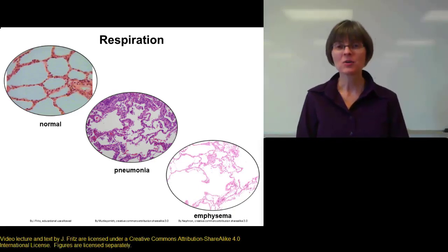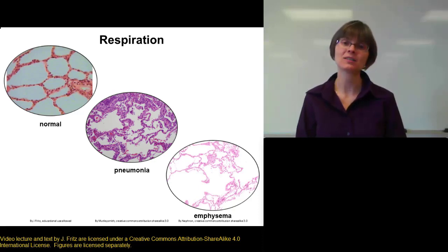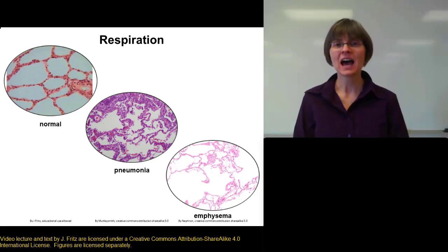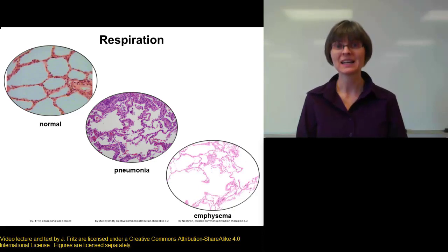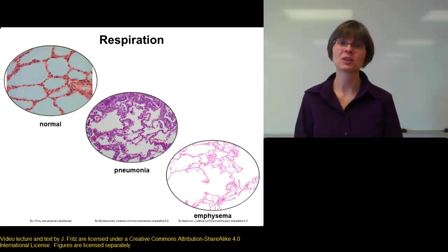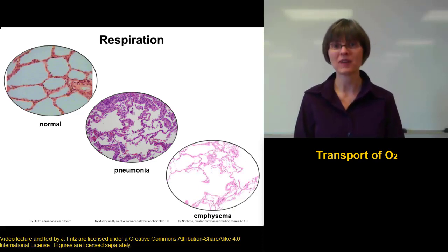Now that we've talked about air flow and about respiration, or the exchange of gases across the respiratory membrane between the blood and the lungs, there's one more thing I want to talk about: how these gases are carried in the blood, or the transport of oxygen and carbon dioxide in the blood, so that they can get from your lungs to your tissues. Let's start by looking first at the transport of oxygen.